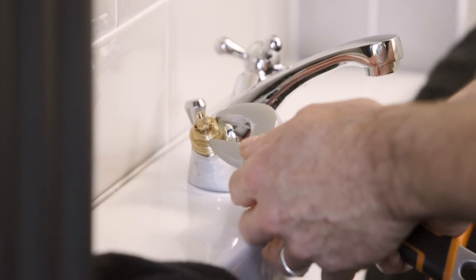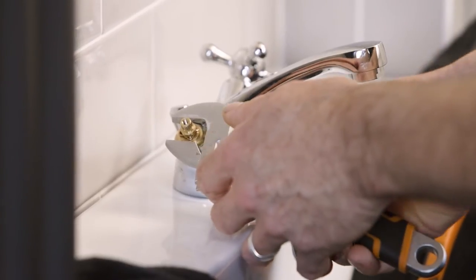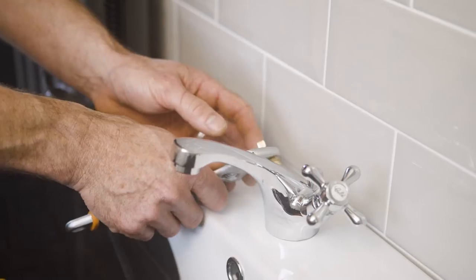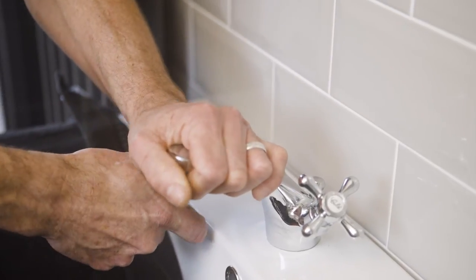Once the cover is off, there should be a hexagonal nut that you'll need to undo using an adjustable spanner. Hold the spout while you do this to stop the tap from twisting.